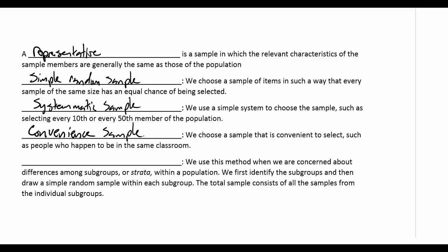The last method we'll discuss is something called a stratified sample. A stratified sample is when we've actually categorized the population and broken them up into subgroups based on some category.